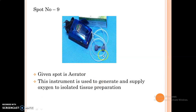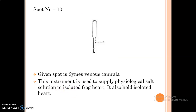The next spot is Aerator. This instrument is used to generate and supply oxygen to the isolated tissue preparation. The next spot is Simms venous cannula. This instrument is used to supply physiological salt solution to the isolated frog heart. It also holds the isolated heart.